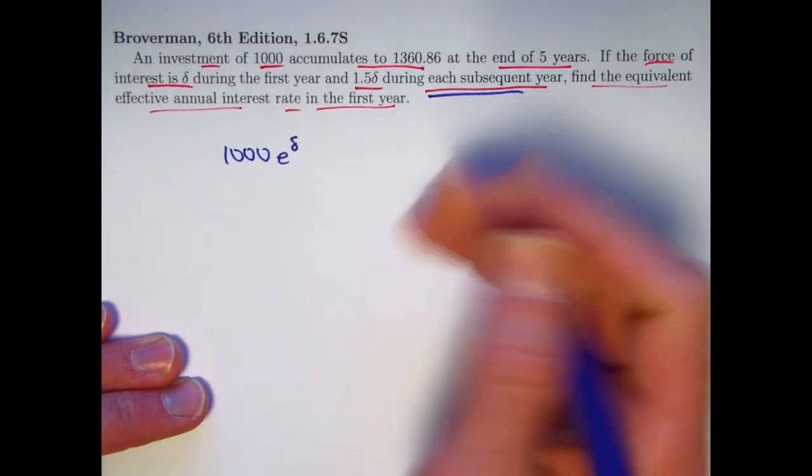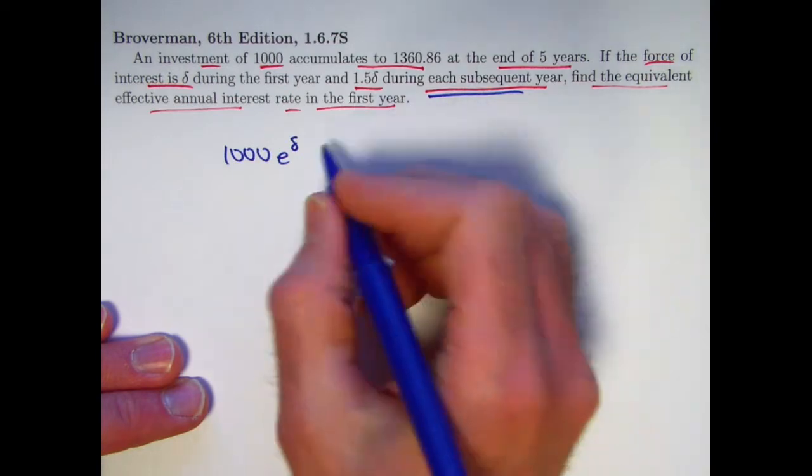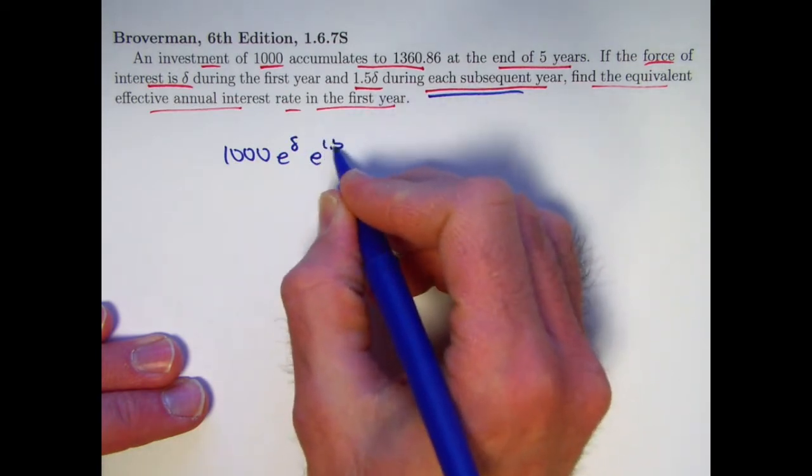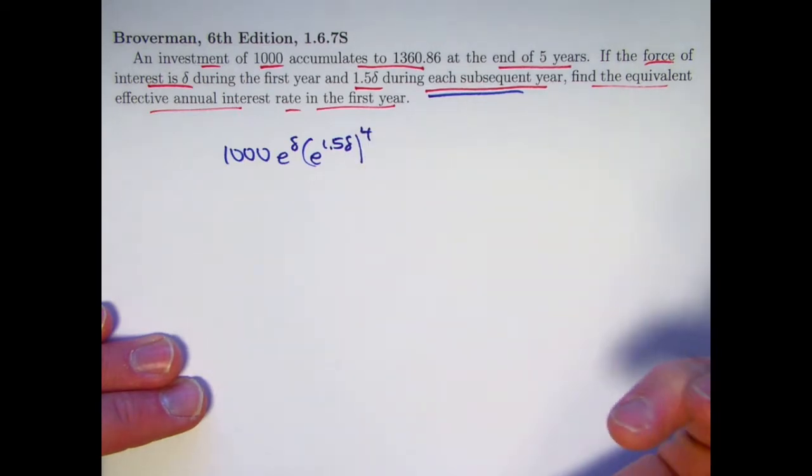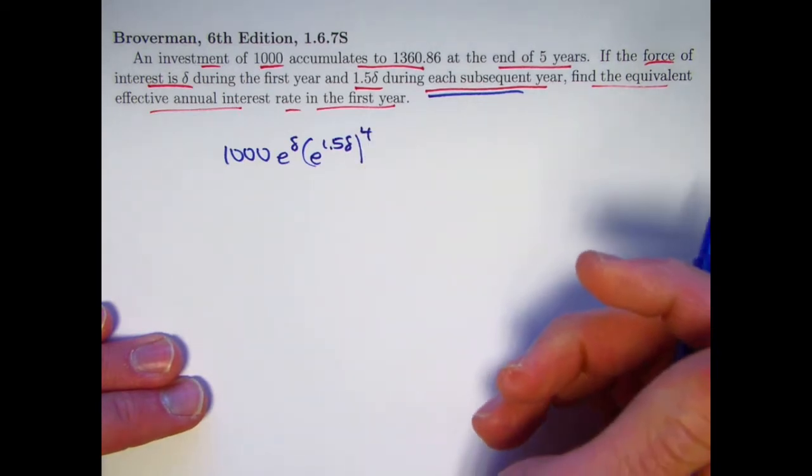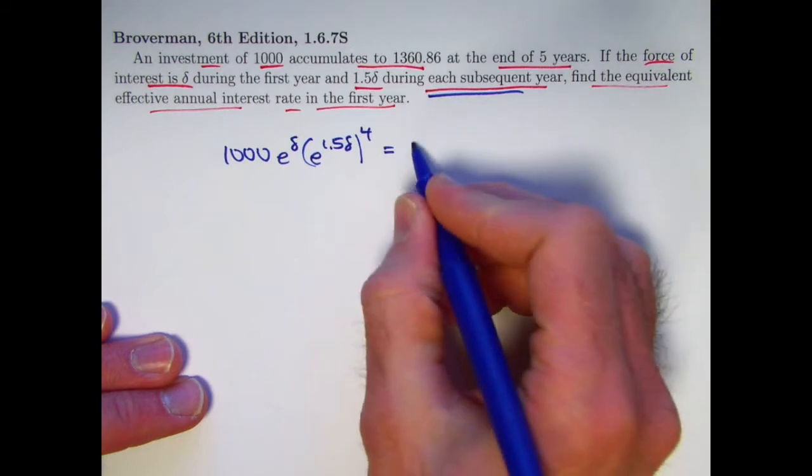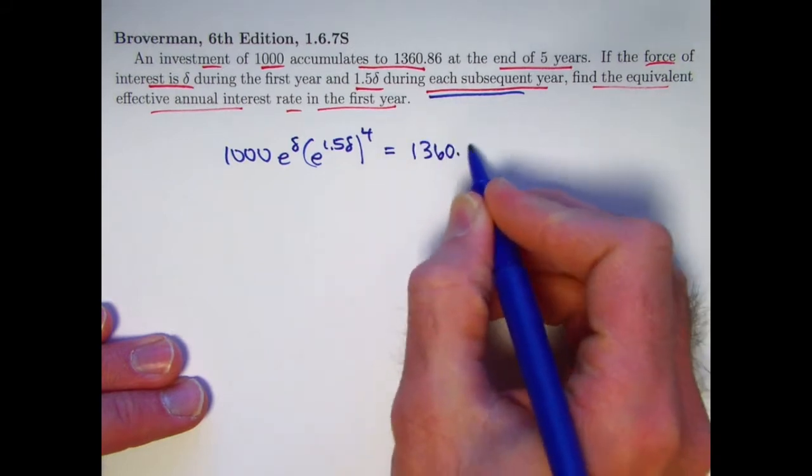Each subsequent year, for four more years, we're going to multiply by e to the 1.5 times delta because the force of interest is 1.5 times delta during each subsequent year. This all has to equal 1360.86.